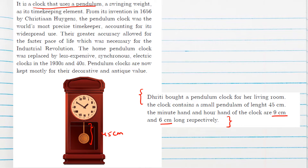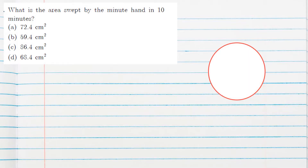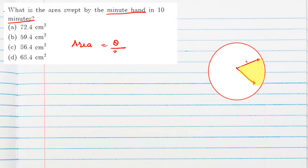The first question is: what is the area swept by the minute hand in 10 minutes? The area swept by the minute hand — from one position to another — is nothing but the area of a sector. The formula for area of a sector is (theta / 360) × π r².